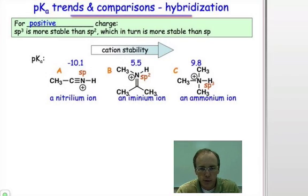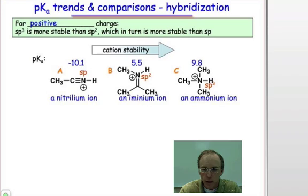From that long list of pKa values, we'd like to pull out a systematic series where we vary only one parameter at a time so we can see the different effects of hybridization or atom type on the stability of the charged species and how that shows up in terms of the pKa or the strength of the acid. Let's begin this process by looking first at the effect of hybridization.